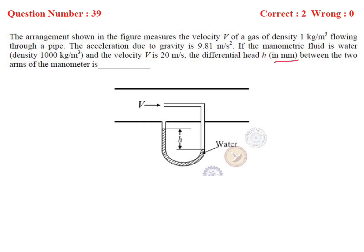Next problem: density of the flowing fluid (gas) is 1 kg/m³, density of manometric fluid is 1000 kg/m³, and gravity g is given. Let point 1 be inside the pipe and point 2 be at the Pitot tube stagnation point. Applying Bernoulli's equation and noting that inside velocity is negligible at stagnation: